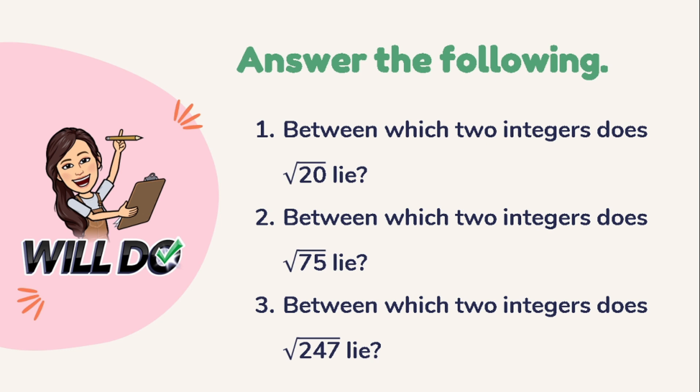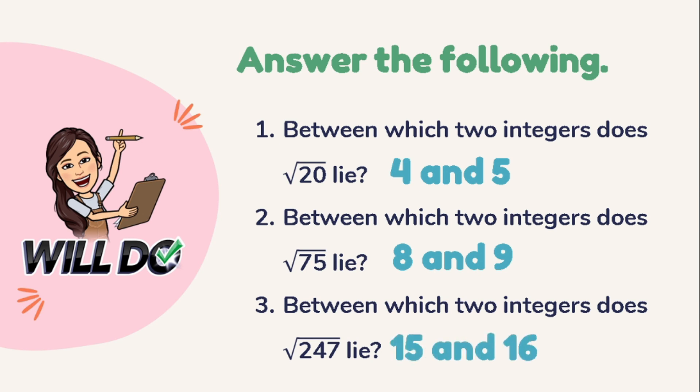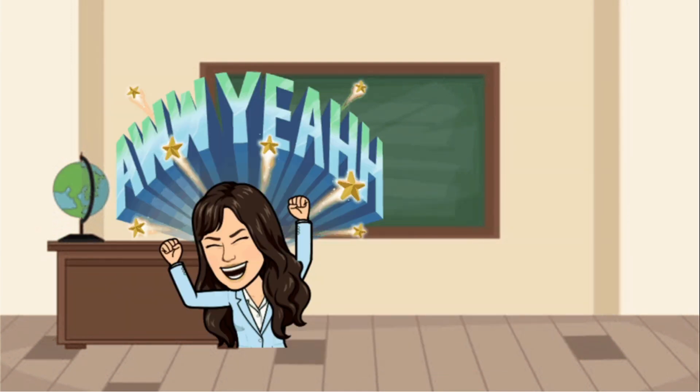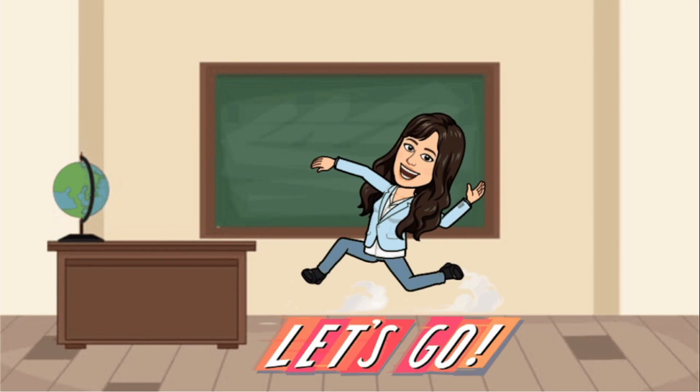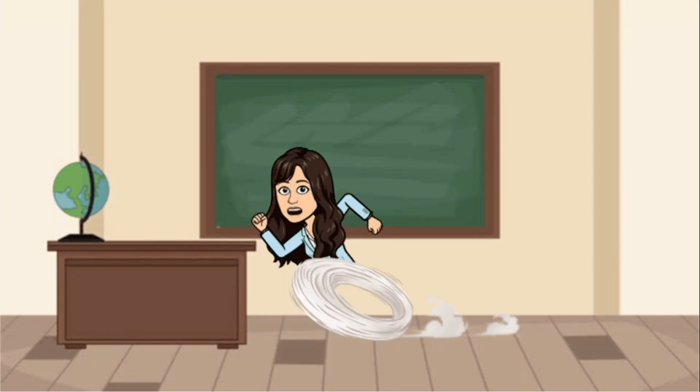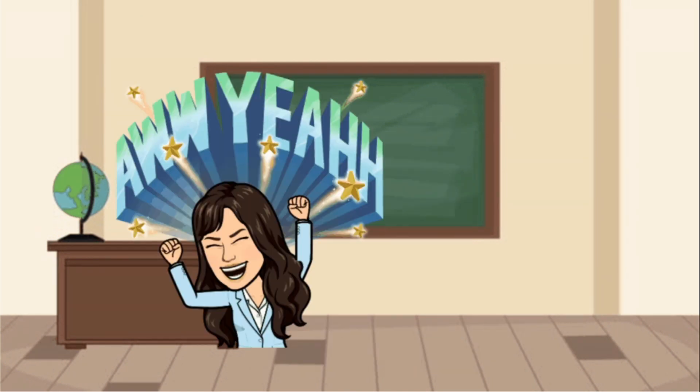Are you now ready to check your answers? Okay, then let's start. Number 1: Between which two integers does √20 lie? The answer is 4 and 5. Number 2: Between which two integers does √75 lie? The answer is 8 and 9. And number 3: Between which two integers does √247 lie? It is 15 and 16. Congratulations, grade 7 learners — that was indeed a job well done! And that ends our lesson today. See you on our next episode. Keep safe, bye!